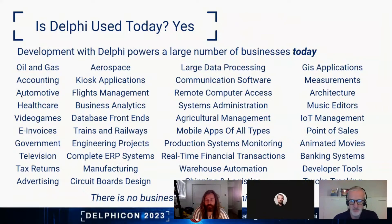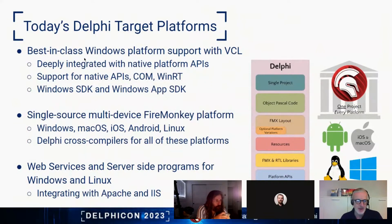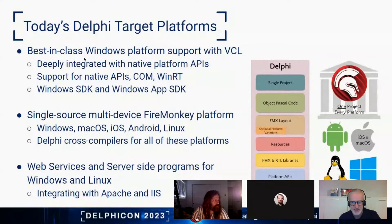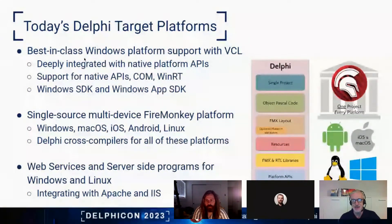We could continue with a very long list — these are things being done today with Delphi around the world. It started as a Windows application but now goes way beyond. It's still best-in-class on Windows, with integrated support from the VCL to the entire platform API — classic Windows API, COM, WinRT APIs, and the Windows App SDK. We now also offer multi-platform development including UI for different platforms through FireMonkey, targeting Windows, macOS, iOS, Android, and Linux — compiling native applications for each platform. You can also build web services and server-side programs for Windows and Linux, with Apache and IIS integration.